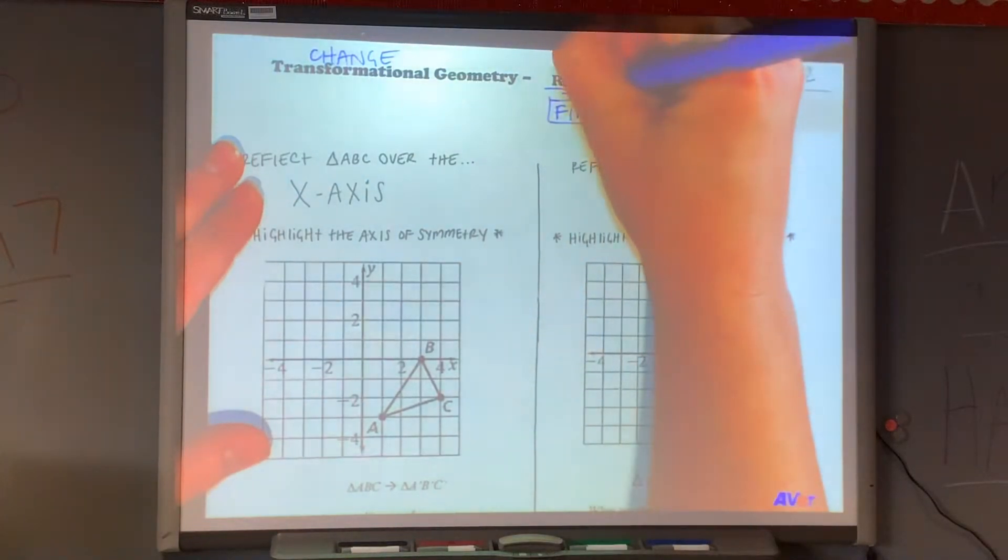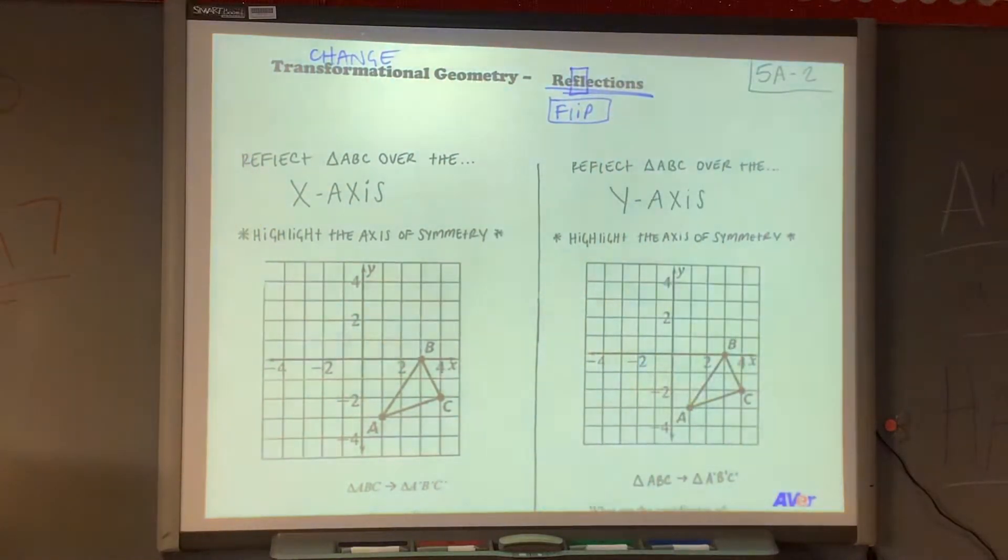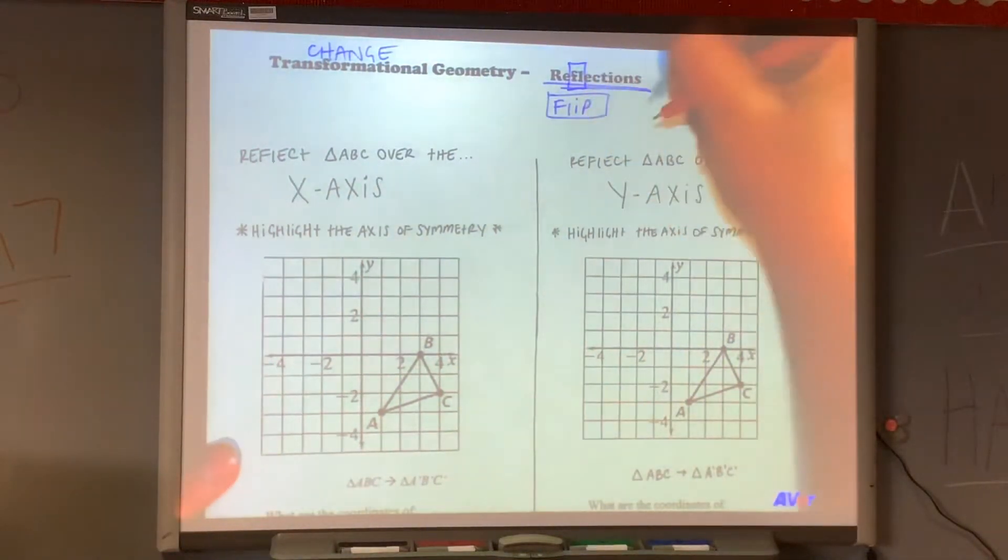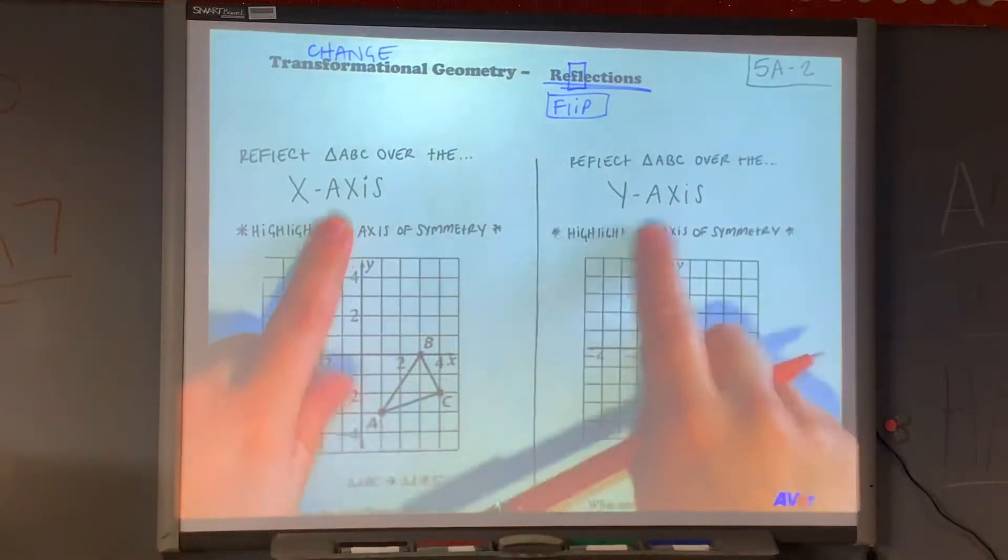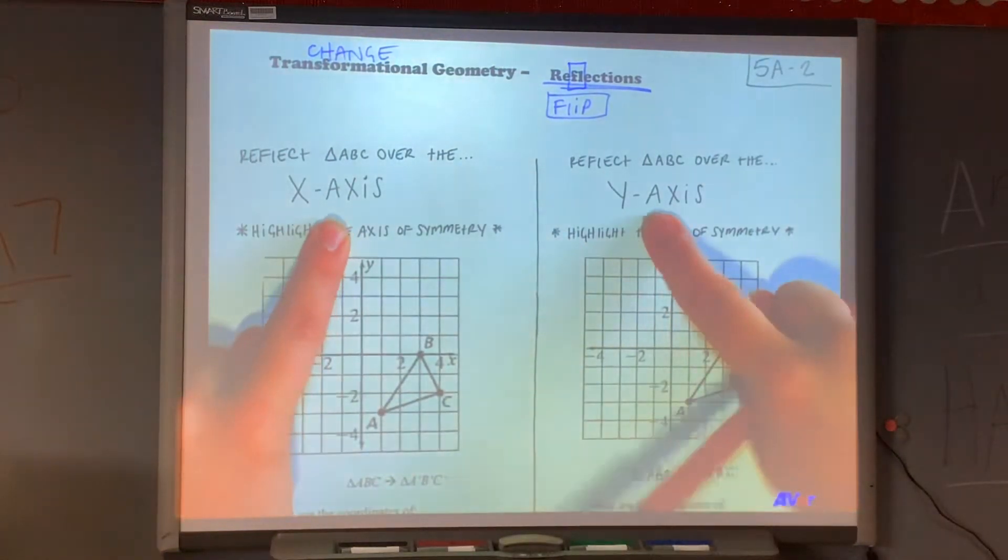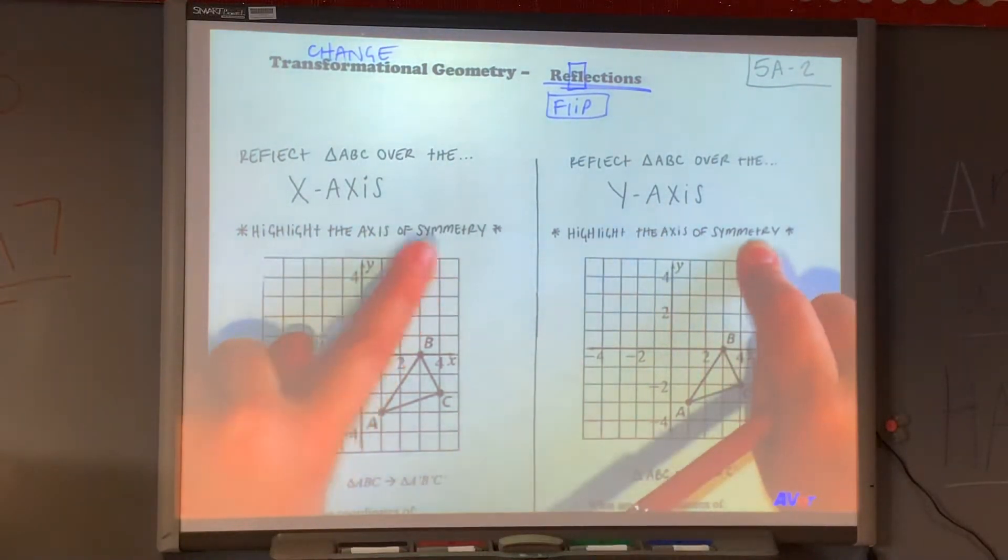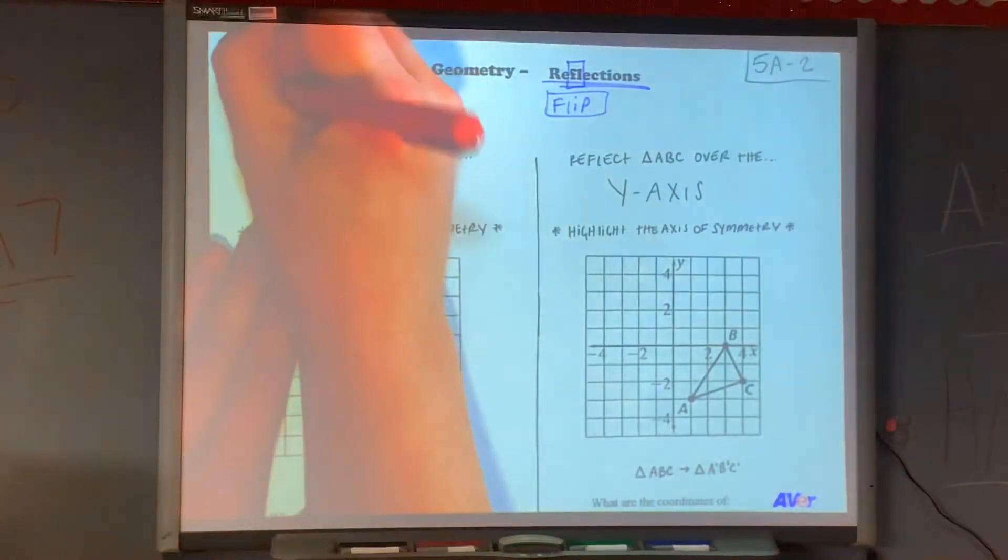If you want to remember, there is an FL in reflections that can help you remember that it is a flip. And we flip over this thing called an axis of symmetry. We have two different types of axis of symmetry in the eighth grade. We have an x-axis and a y-axis, which we are very familiar with those. Those are our new axis of symmetry. It basically is the line that cuts the picture in half.